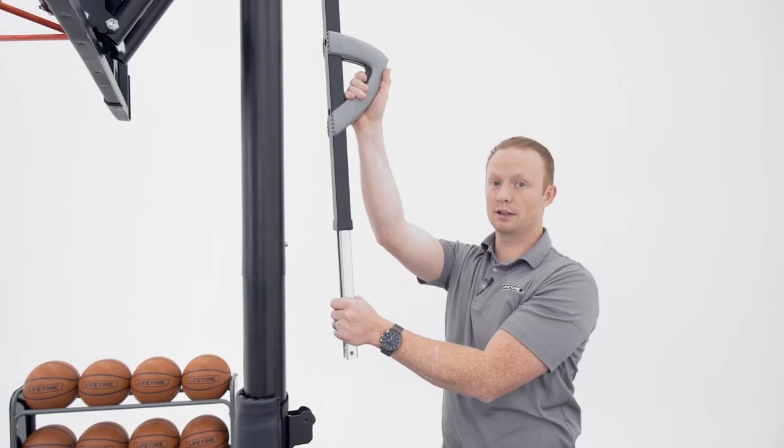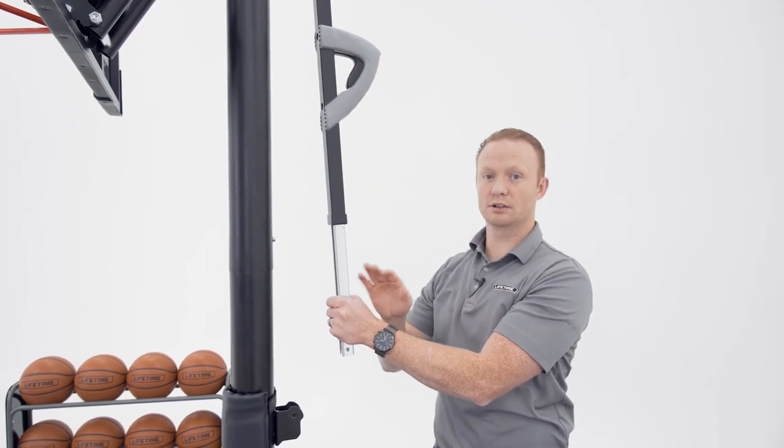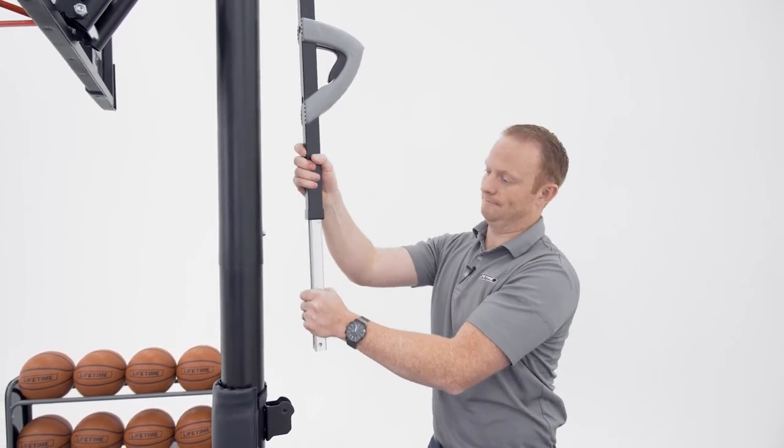Release the trigger to lock it into place but don't let go of the inner channel until you know it's locked. Lower the channel to its lowest setting and remember don't let go until you know it's locked into place.